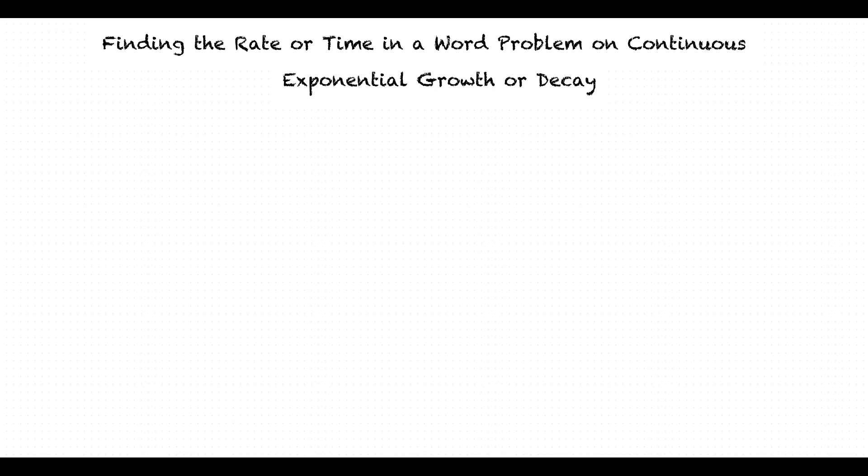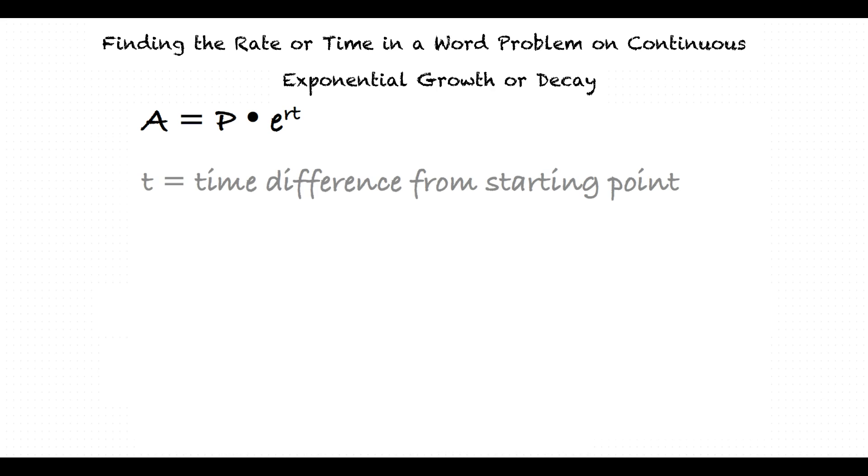Before we get started, can we go over what continuous exponential growth or decay means? Sure. First, let's look at the general formula for problems of this type: A equals P times e raised to the rt. t represents the time difference from the starting point and r represents the constant rate of growth.